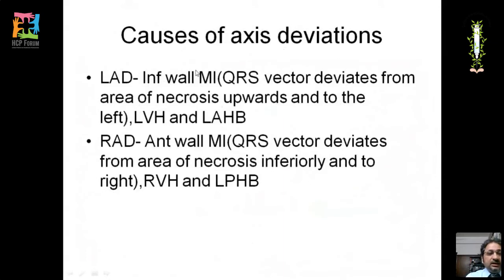Left axis deviation is caused by inferior wall myocardial infarction — the QRS vector deviates away from the area of necrosis, upward and to the left. Other causes include left ventricular hypertrophy and left anterior hemiblock.